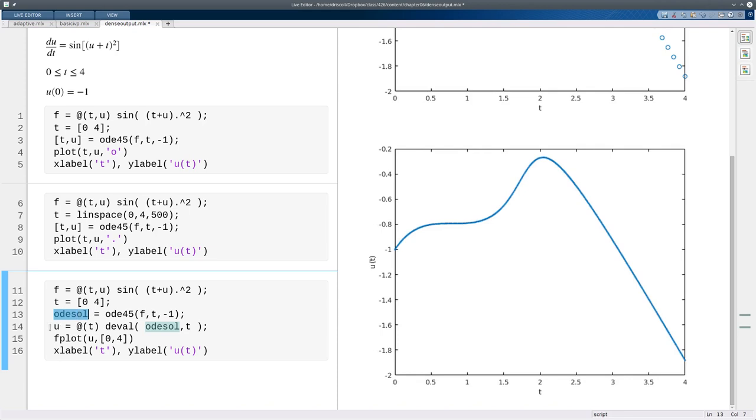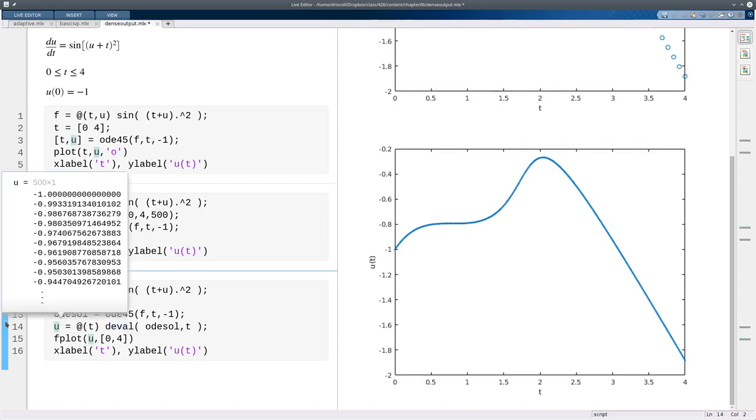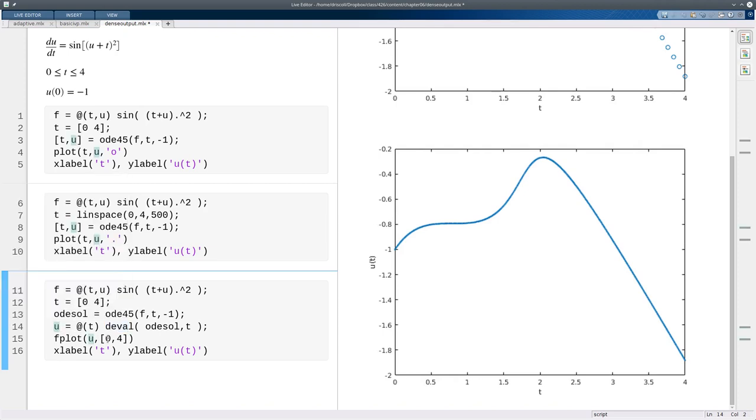And then I create a function U, which is a function of T only. And it calls this built-in thing called DEVAL and the solution that I've found. So now at this point U is a callable function like anything else, and I can plot it or evaluate it wherever I want.